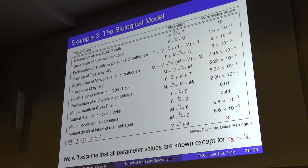These parameter values for how fast things are happening are published values. The idea is: assume we know all parameters except delta_5, and use data to estimate this one parameter from the model.